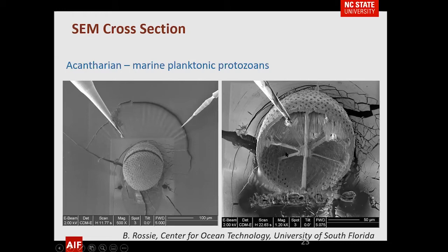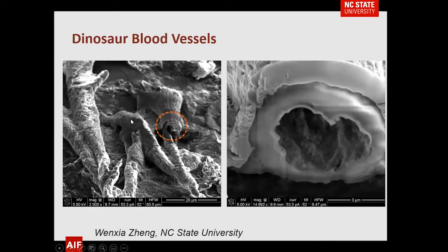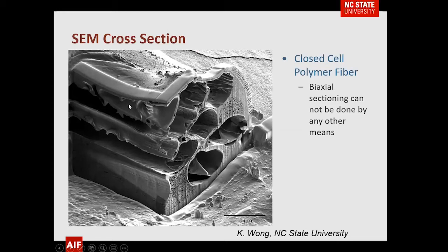At NC State there is a program studying dinosaurs — they're actually looking at dinosaur blood vessels and the types of material within them. For fibers, NC State has a very large College of Textiles. This is an example of a particular polymer fiber. They often do something called 'islands in the sea,' where you have a sea of material with strands inside. Here, two SEM cuts — one this way and one this way — give you a pseudo-three-dimensional picture.